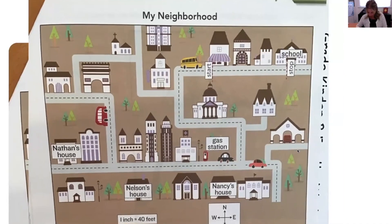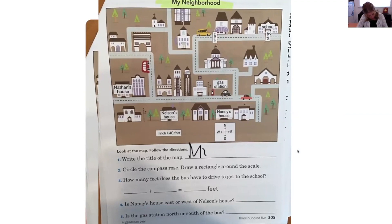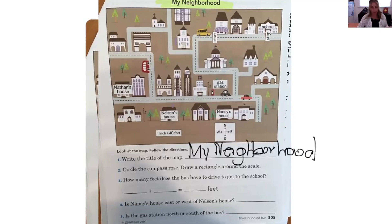Now let's get to the questions. Number one: write the title of the map. Do you see the title? It is right there — "My Neighborhood." So we got to write in the title right here. I ran out of room, but that's okay.